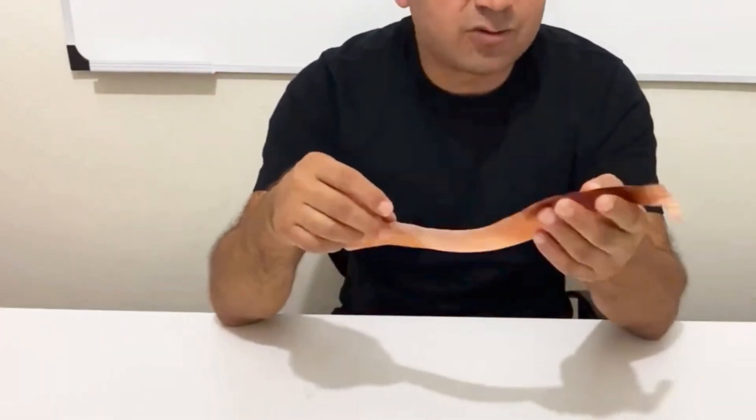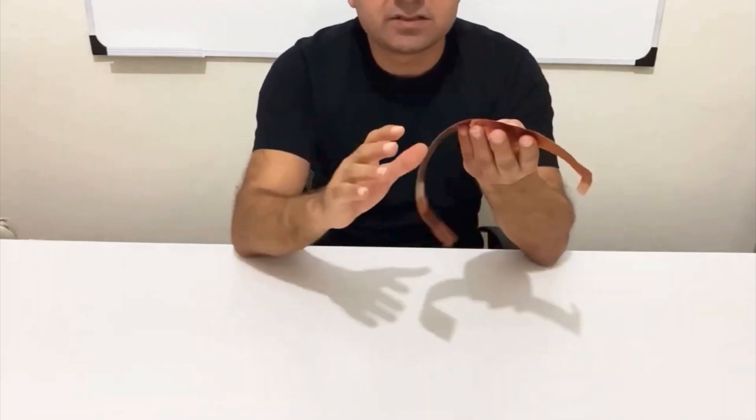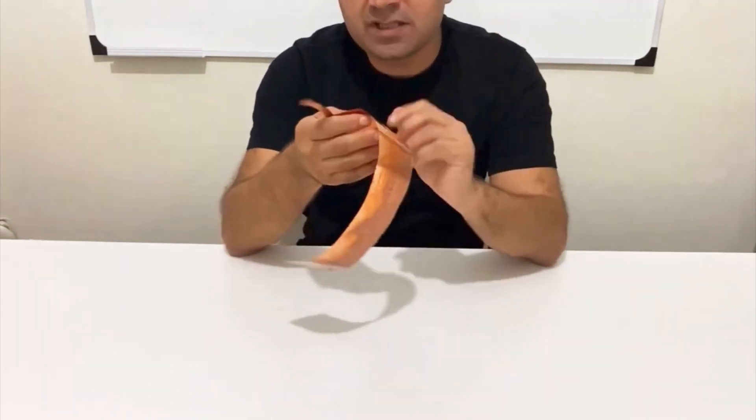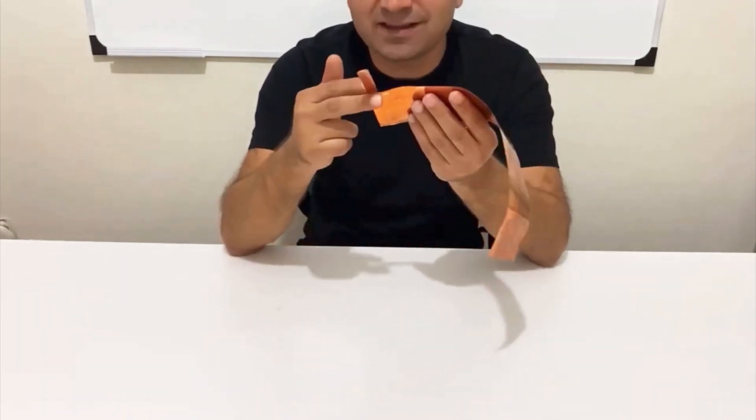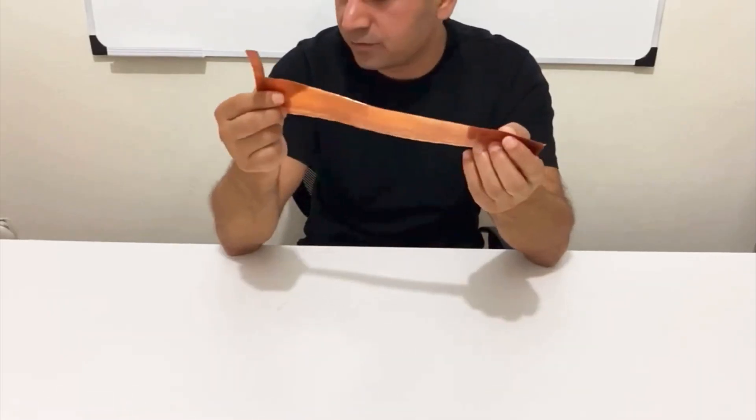First thing we need is a copper foil. As you see, 30 centimeters to 6 centimeters, a copper foil. And as you see, we have a part over here. Don't cut this part because we are going to use this part as the terminal of the battery.